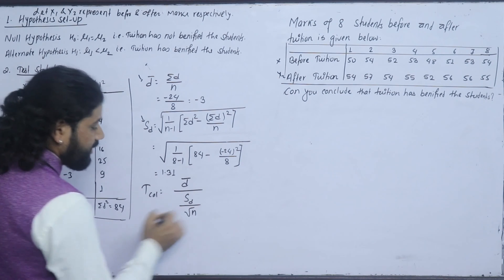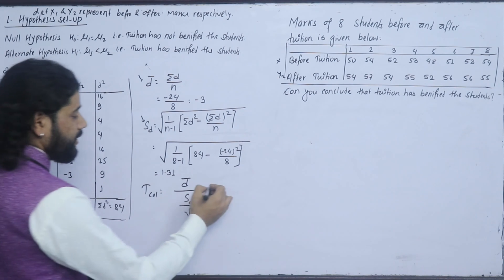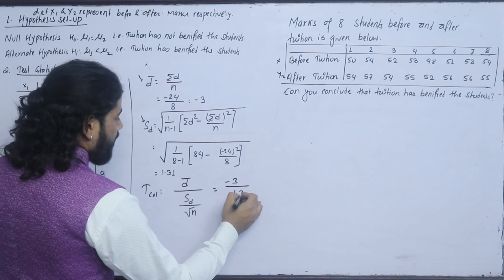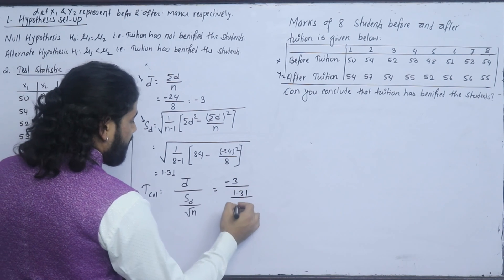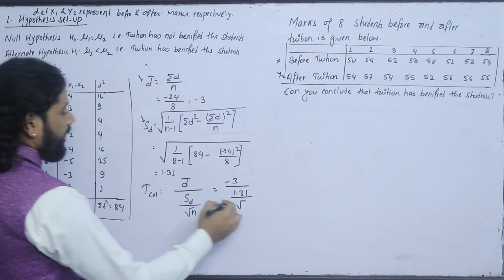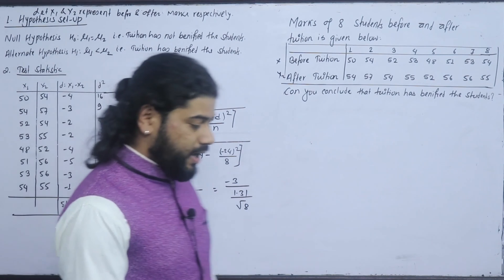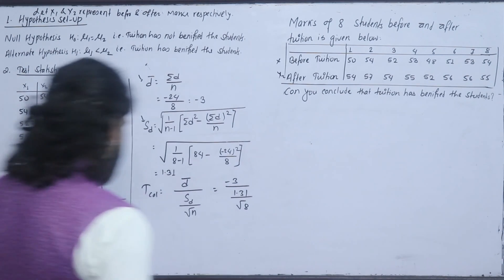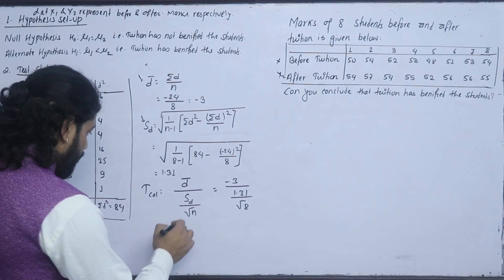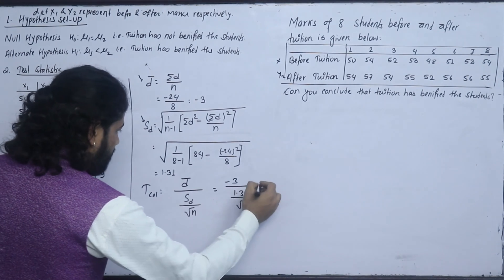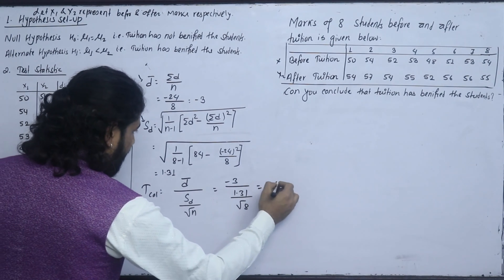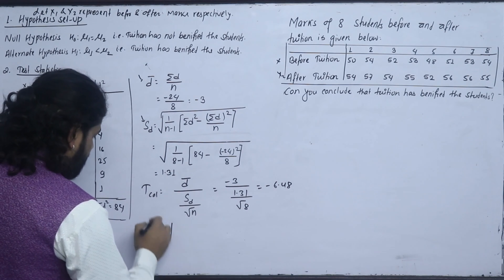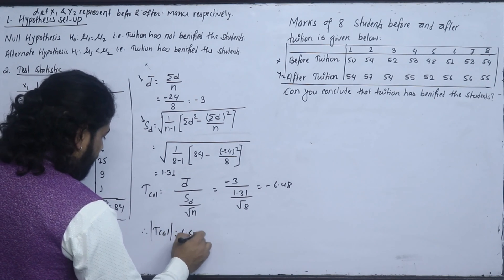So this is n - 1. The d-bar value is -3. The standard deviation s = 1.31. Applying root under 8 gives T = -3 / (1.31 / √8). Simplifying s gives 6.48. So T calculated = 6.48 (taking modulus).